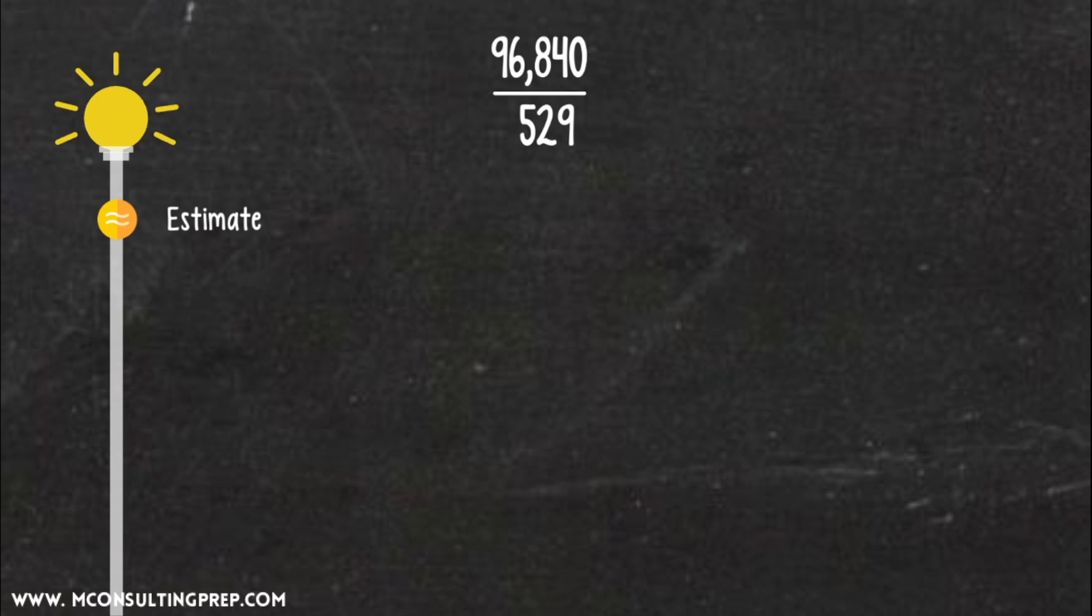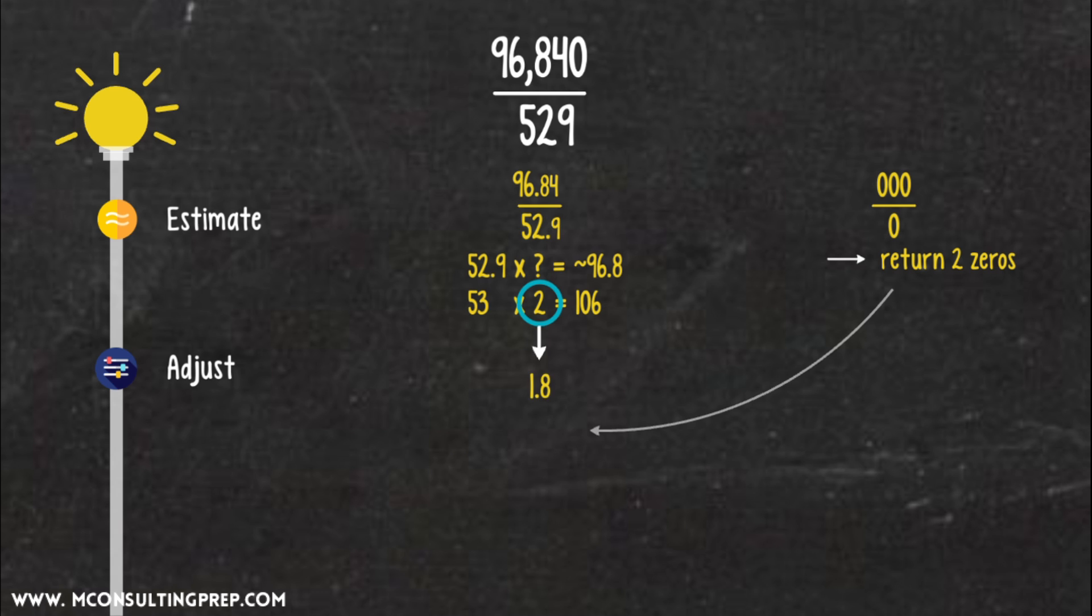Step 1. Estimate. We will have a simplified version of 96.84 divided by 52.9, taking out three zeros in the numerator and one zero in the denominator, which means that we will return two zeros in the last step. Technically, we need a step of rounding here, but in this case, we can just skip it and make an overall adjustment later. Now, turn division into multiplication and find x. 52.9 times x equals roughly 96.8. We know 53 times 2 equals 106. Thus, x is a little bit lower than 2. Step 2. Adjust. With the downward adjustment for two, we have 1.8. And with zeros, it's 180. The correct answer is 183.06.